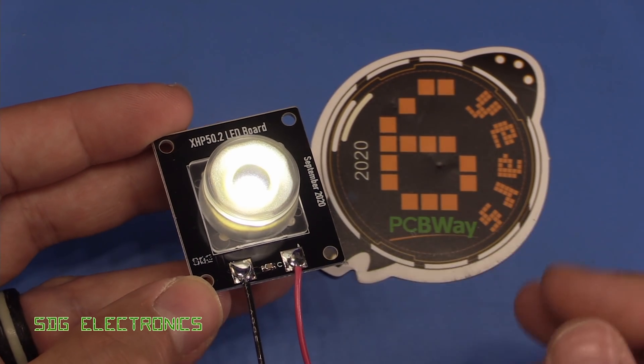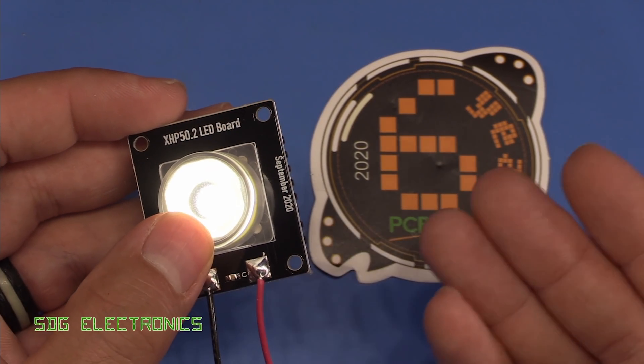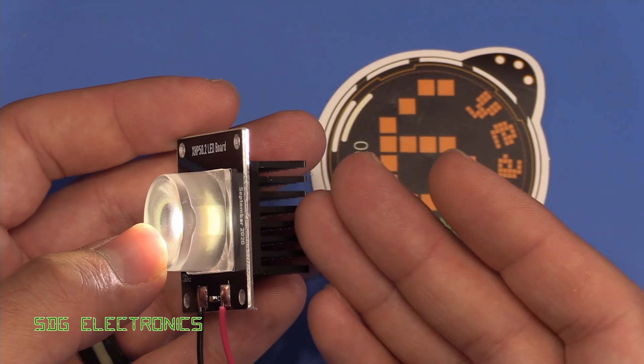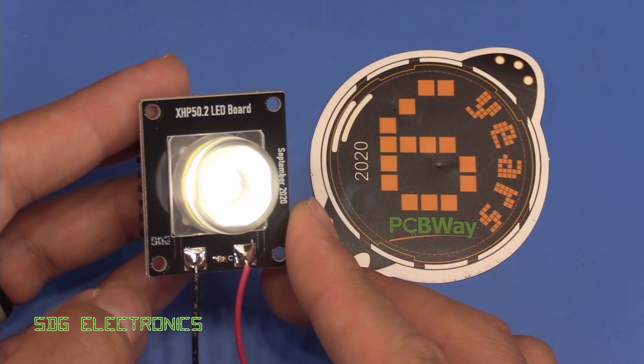And a big thank you to PCBWay for supplying these PCBs for this test. And certainly, the difference between the two does mean that these are suitable for the ring light as well. So I may well install some of these in one of the future designs.